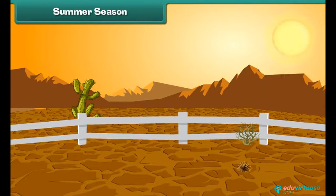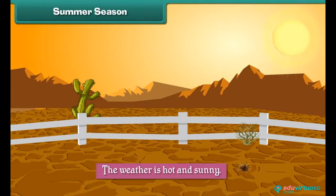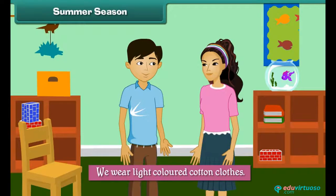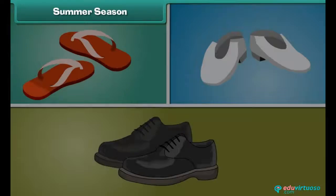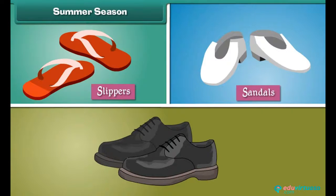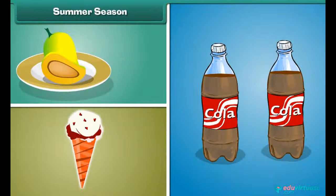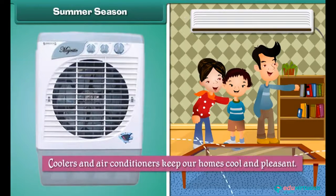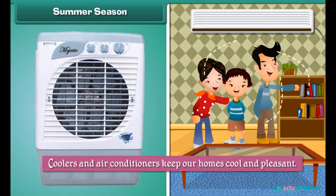In the summer season the weather is hot and sunny. We wear light colored cotton clothes to stay cool. We wear slippers and sandals and avoid shoes. We enjoy mangoes, ice creams and cold drinks. We use coolers and air conditioners to keep our homes cool and pleasant.